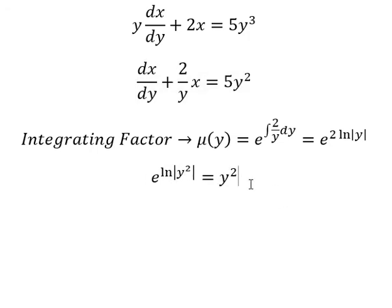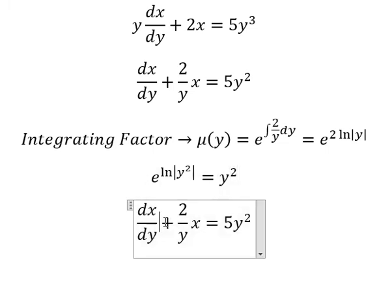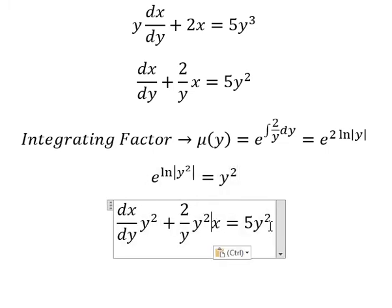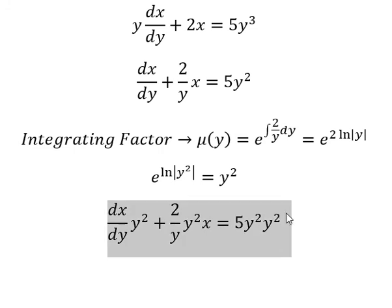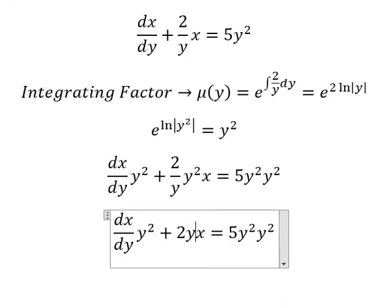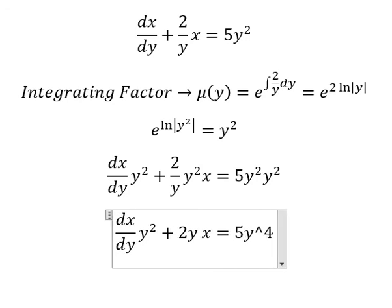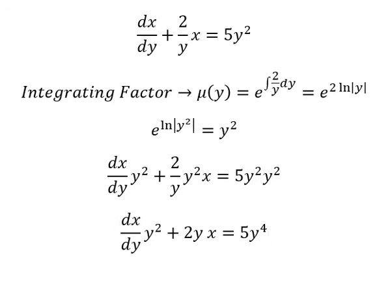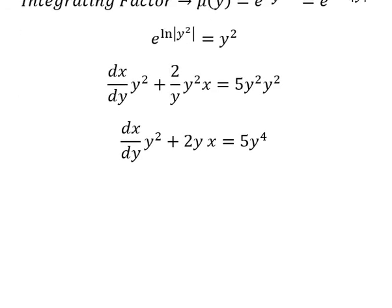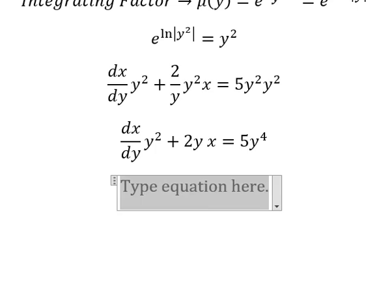That means we need to multiply both sides by y squared in here. This one you got 2y. This one you got y to the power of 4. And now we need to put the integral for both sides.